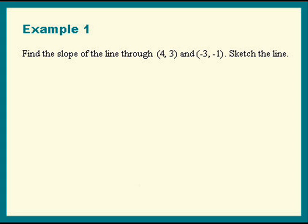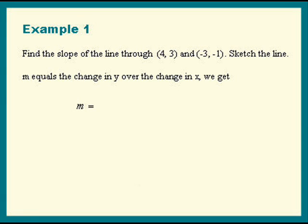The slope is the change in the y's over the change in the x's. We get change in the y's, -1 minus 3. Change in the x's, x2 minus x1, -3 minus 4. We get -4 divided by -7, which is 4 over 7.